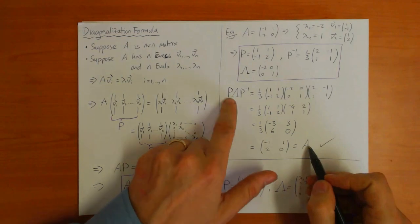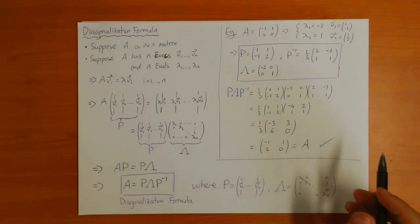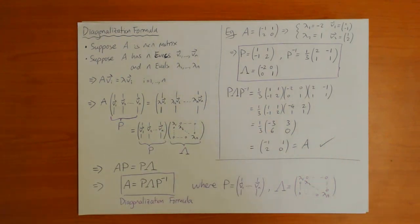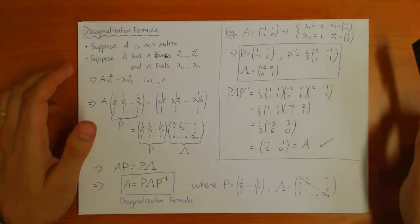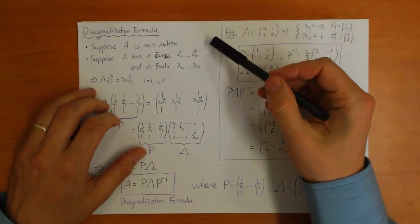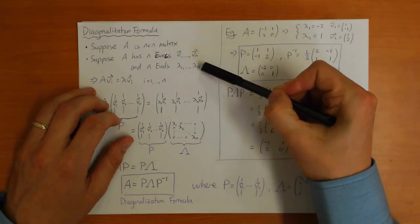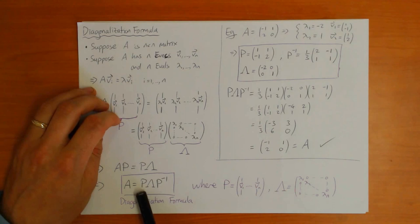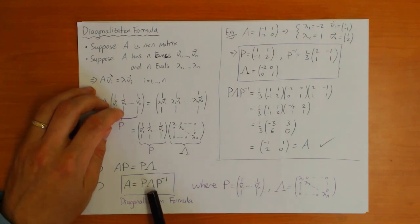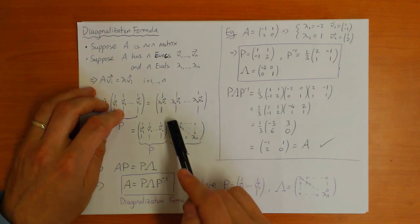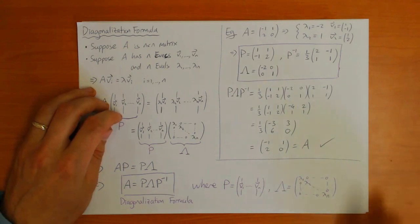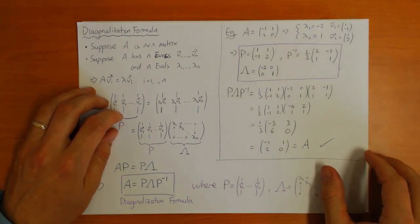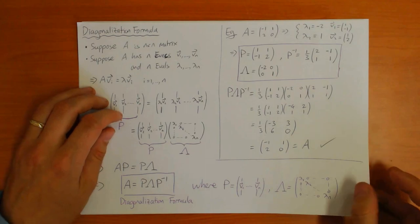That confirms the diagonalization formula is correct for this example, and the derivation shows it always holds. Provided your matrix has n eigenvectors and n eigenvalues, you can always write it as P times lambda times P inverse. The next video will show you how to use this formula.